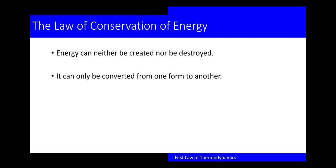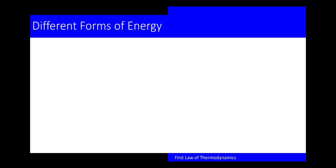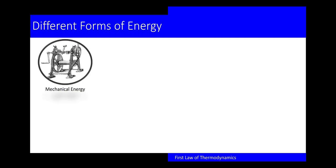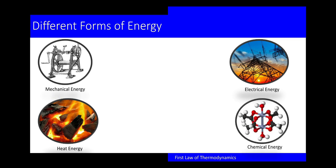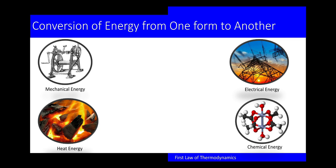First, let's see about the law of conservation of energy. It states that energy can neither be created nor be destroyed — it can only be converted from one form to another form. Energy is always conserved. In this universe we have many different forms of energy: mechanical energy, electrical energy, heat energy, chemical energy, and so on.